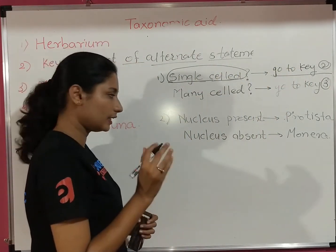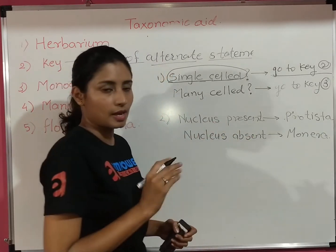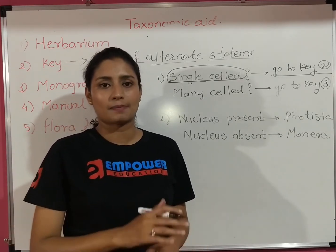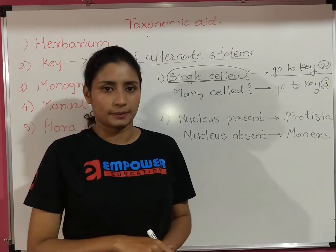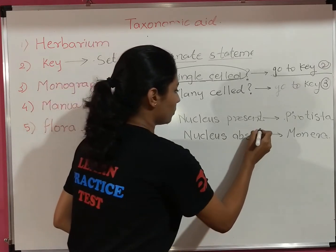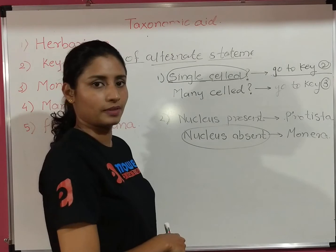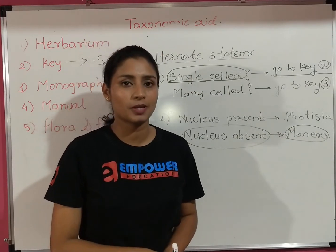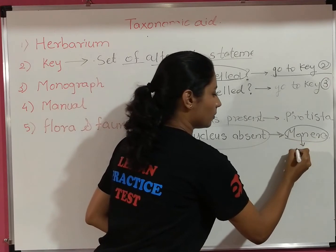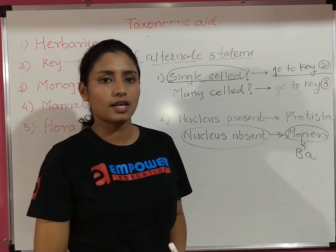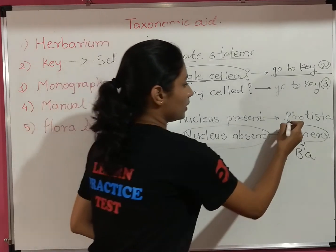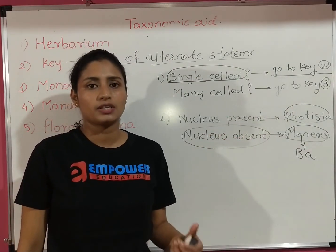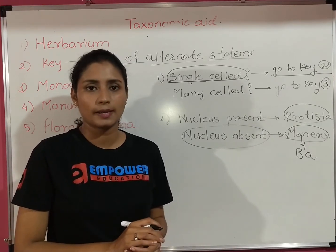At key number 2, you check whether the nucleus is present or absent. If nucleus is absent, it belongs to kingdom Monera — the organism is bacteria. If nucleus is present, it belongs to Protista. In this way, keys help in identification as well as the entire study of organisms.